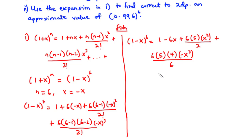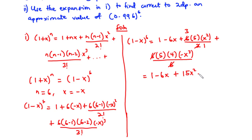Further simplifying: 2 cancels into 6 to give 3 times 5 equals 15x squared, and 6 cancels with 6 leaving 5 times 4 equals 20 times negative x cubed, giving minus 20x cubed. So the binomial expansion of (1 minus x)^6 is 1 minus 6x plus 15x squared minus 20x cubed.